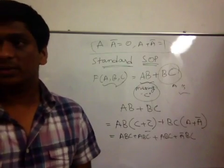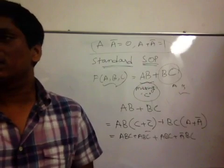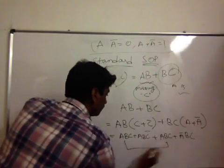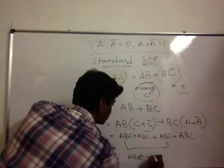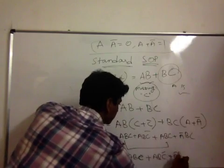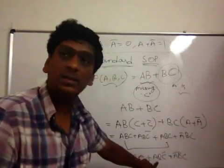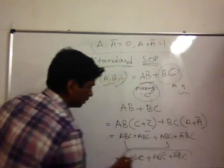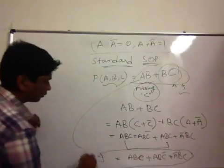So, these two you can write it down as ABC plus. So, ABC bar plus A bar BC. This is a product. This is a product. And this is a product. This whole thing is a sum. So, I have changed this SOP into this one.